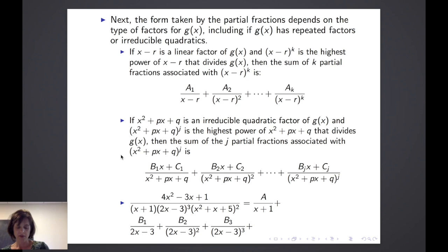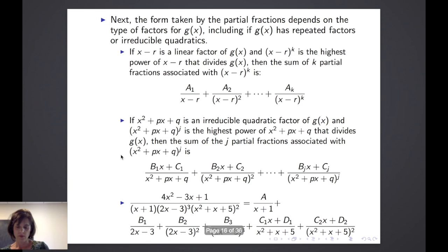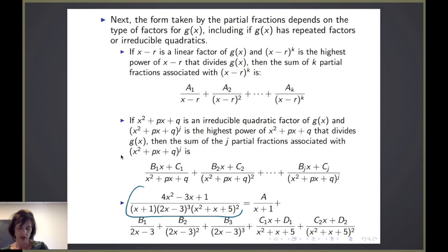Then the last set of partial fractions corresponds to (x² + x + 5)². The power of 2 means two partial fractions associated with that factor, and since x² + x + 5 is an irreducible quadratic, I will have linear terms in the numerators. So I have C₁x + D₁ over (x² + x + 5), plus C₂x + D₂ over (x² + x + 5)². So I have a total of six partial fractions associated with this rational function.